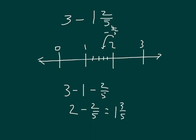Looking at this another way, 2 can be expressed as 1 plus 1, so that we have 1 plus 1 minus 2 fifths. 1 minus 2 fifths is 5 fifths minus 2 fifths, which does equal 3 fifths. So we have 1 plus 3 fifths, which does equal 1 and 3 fifths.